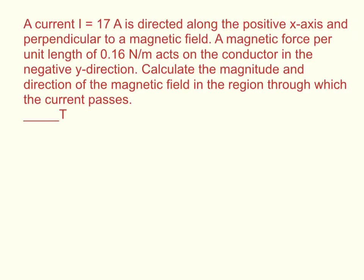A current I equals 17 amps is directed along the positive x-axis and perpendicular to the magnetic field. The magnetic force per unit length of 0.16 newton meters acts on the conductor in the negative y direction. Calculate the magnitude and direction of the magnetic field in the region through which the current passes.